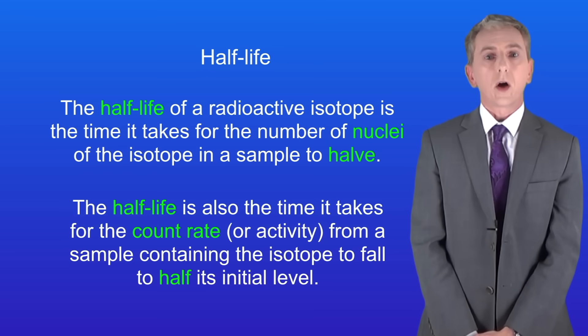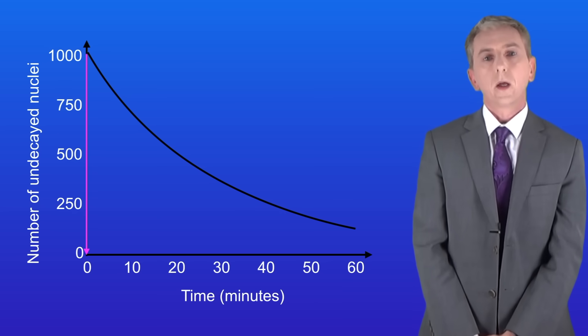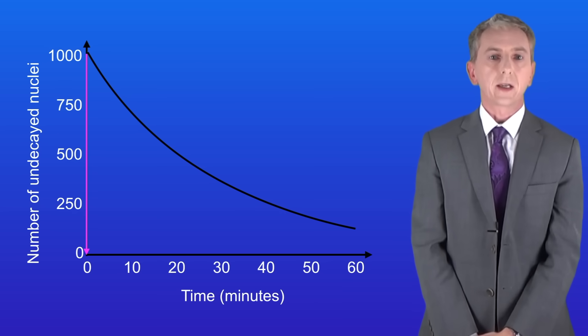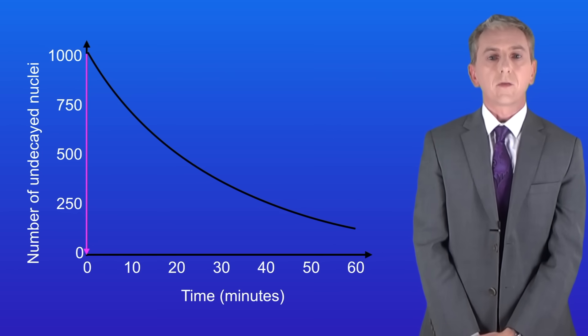Now you could be asked to work out the half-life of an isotope from a graph such as this one. This shows how the number of undecayed nuclei remaining in a sample of isotope changes with time. We're starting with 1000 undecayed nuclei and we need to find the time it takes for this to half. Half of 1000 is 500.